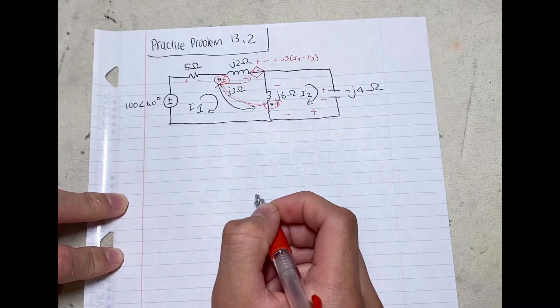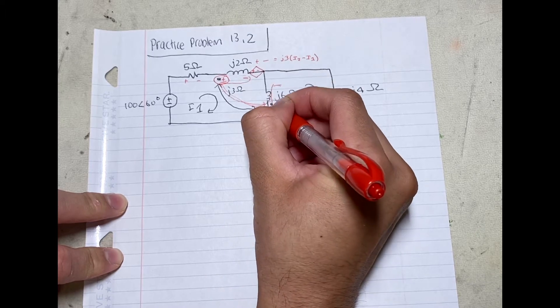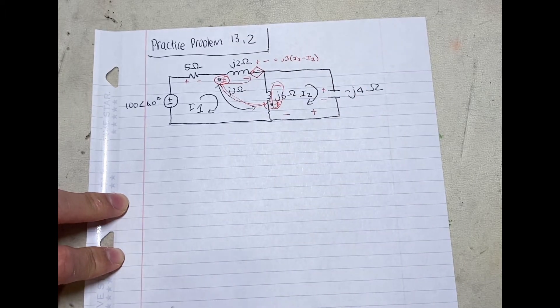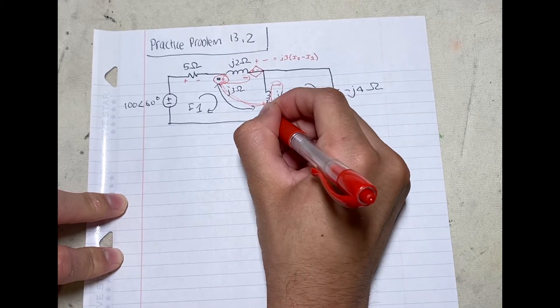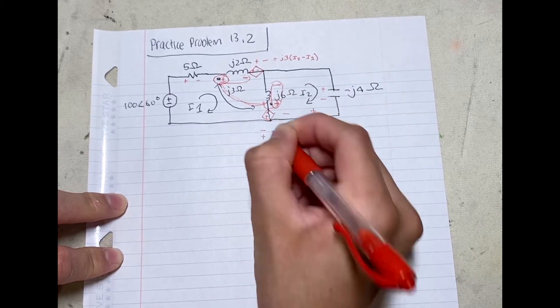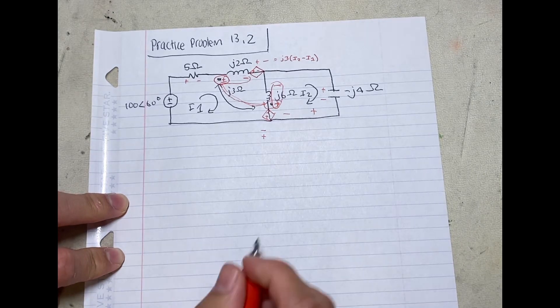Plus minus, pair the two together, and then shift it down. And that's going to be the polarity of my dependent voltage source. The dependent voltage source is going to be J3 of I1.